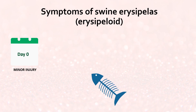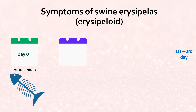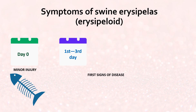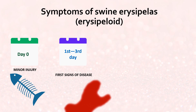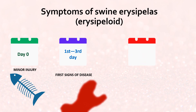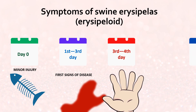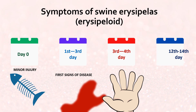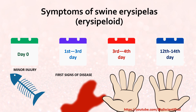Usually the disease begins one to three days after a minor injury, so its cause often remains unknown to the patient. A dark-red spot appears at the injection site; the skin swells slightly and thickens, and movement in the joints of the fingers becomes difficult. On the third or fourth day of the disease, skin hyperemia subsides and only some thickening is noted.